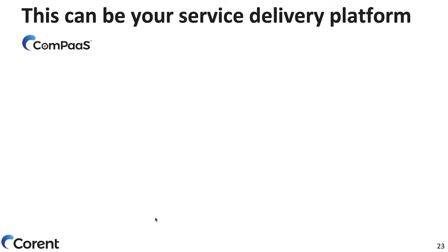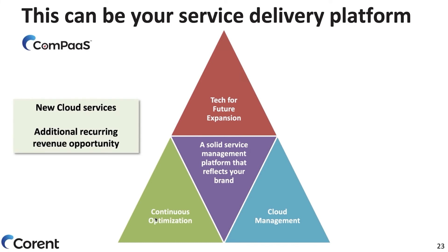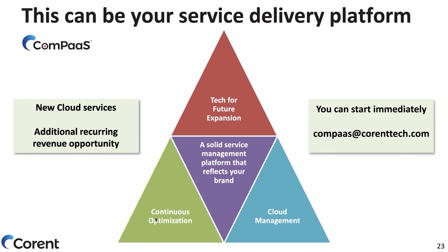From what you've seen, there are multiple capabilities in the platform — from governance to continuous cloud optimization and cloud management. Based on the platform, you can extend additional services and use these as your service delivery platform, creating new revenue streams through new cloud services. We also offer the ability to connect to cloud marketplaces so you can start provisioning customers through AWS or Azure cloud marketplaces and bring them in as new customers. You can start immediately using compass at corentech.com.